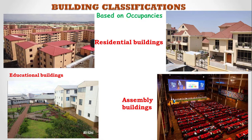We also have educational buildings. As the name indicates, the purpose of these buildings is for educational instruction. The best example is a school. Based on occupancy, we also have assembly buildings — these are buildings occupied by groups of people for amusement, recreation, or social purposes.